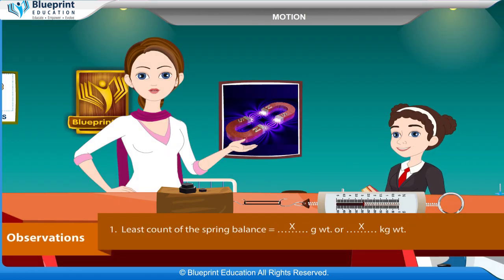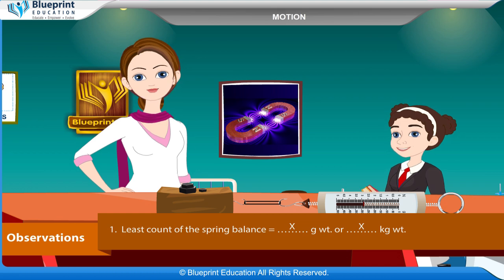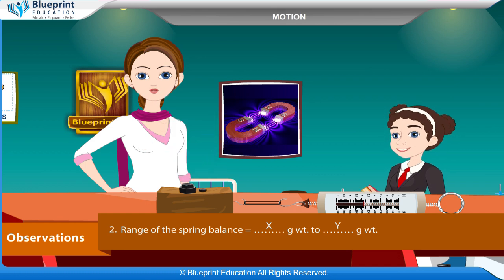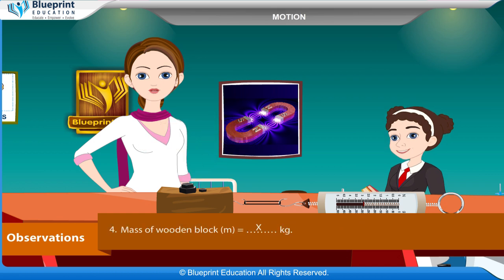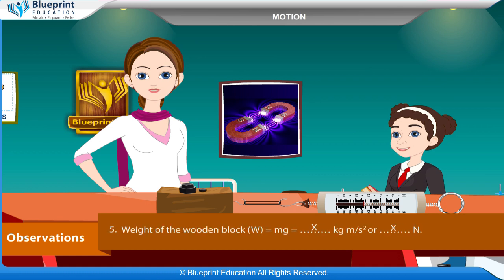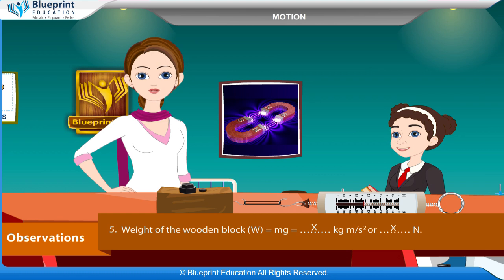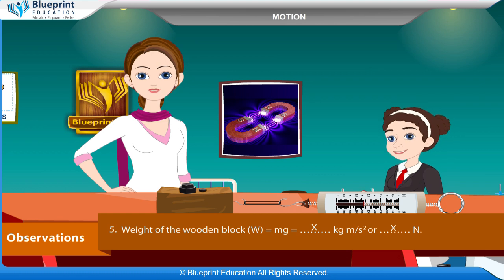Observations: Least count of the spring balance = x gram weight or x kilogram weight. Range of the spring balance = x gram weight to y gram weight. Acceleration due to gravity g = x meter per second square. Mass of wooden block m = x kilogram. Weight of the wooden block w = mg = x kilogram meter per second square, or x newton.